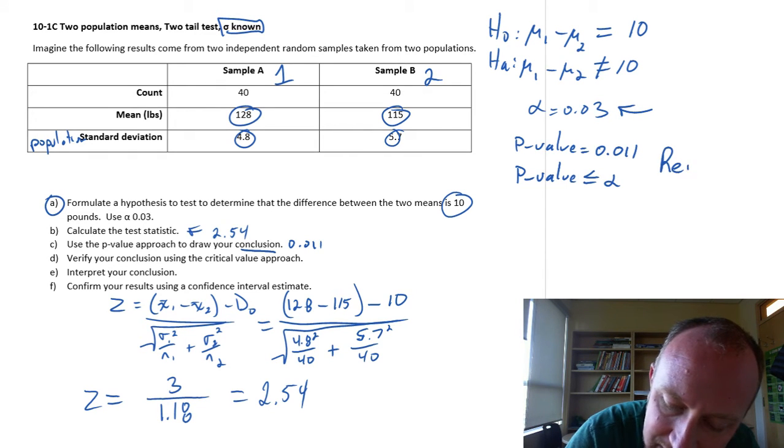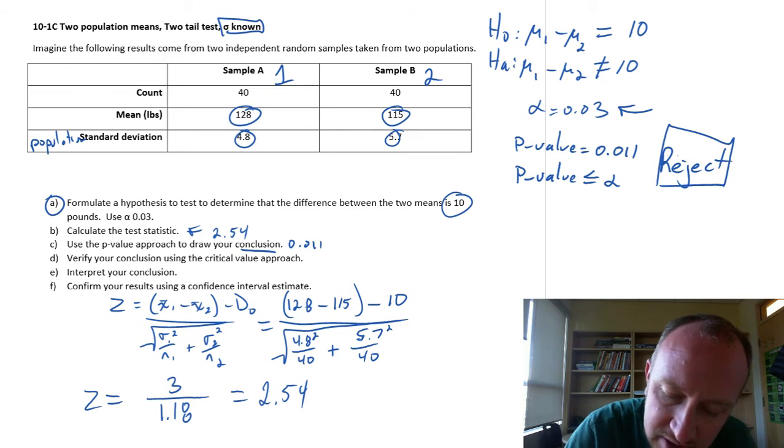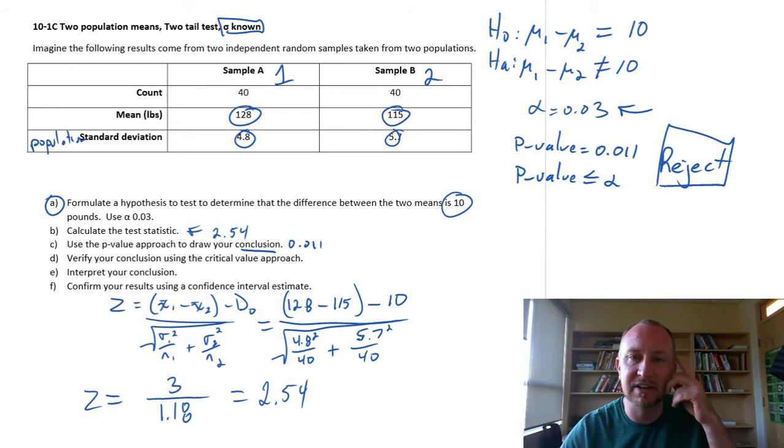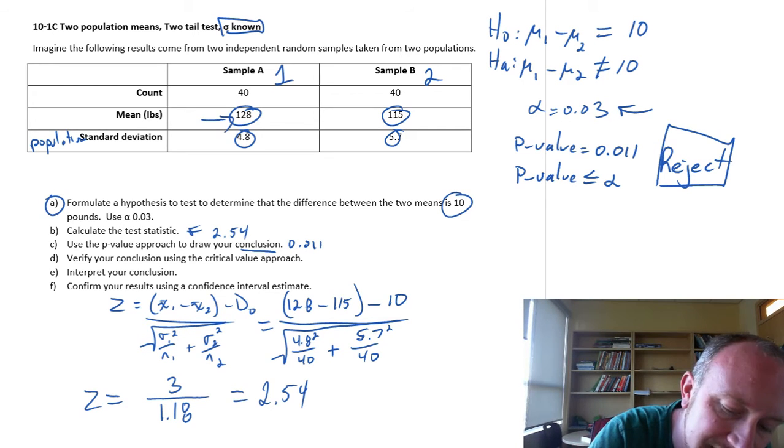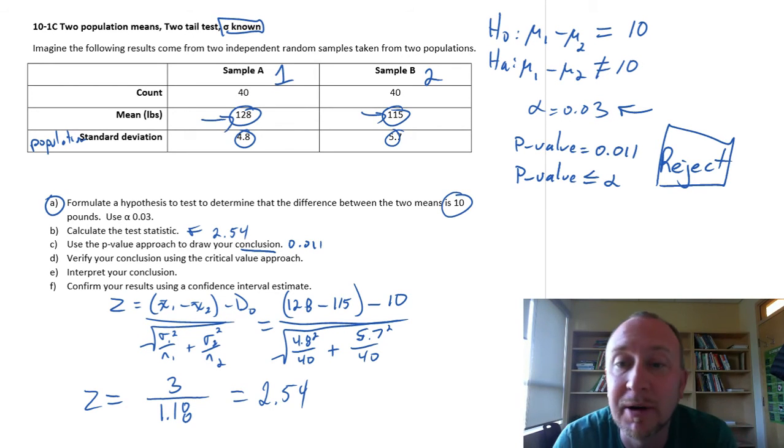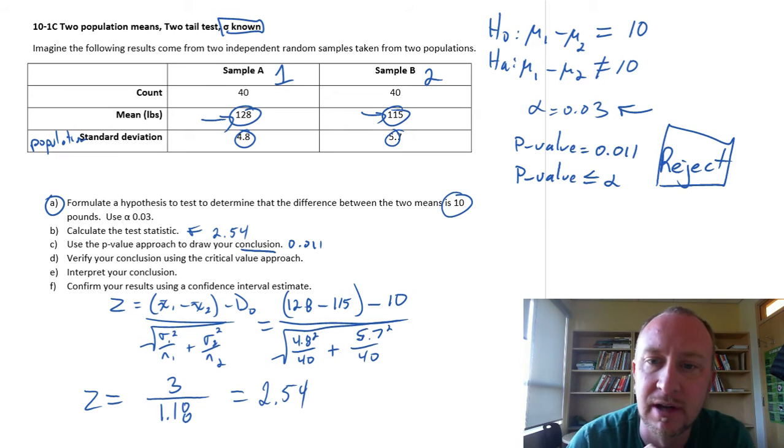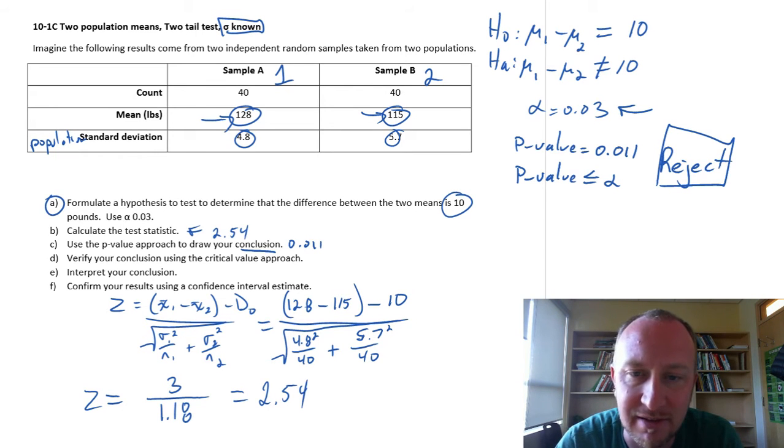So we can reject, which means that we do have evidence that supports the alternative hypothesis. That difference in these two means, the difference in the two population means, is different from 10. So that evidence does support the alternative hypothesis.